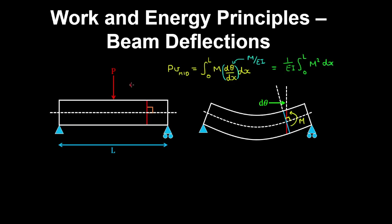Now if we look at this beam, we know that by symmetry the reactions on each side are equal to half the external load, and the bending moment is therefore piecewise linear. From x equals 0 to L on 2, we have an equation for the bending moment that is P on 2 multiplied by x.